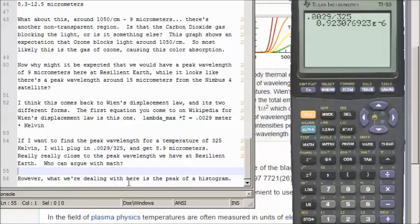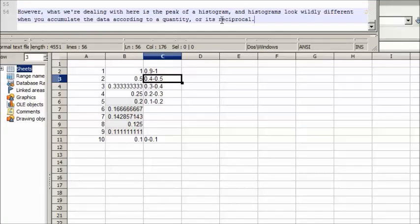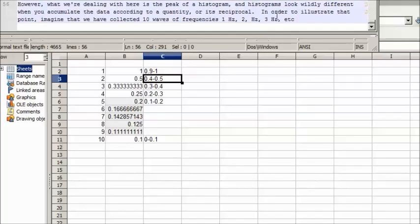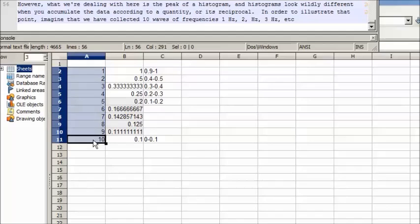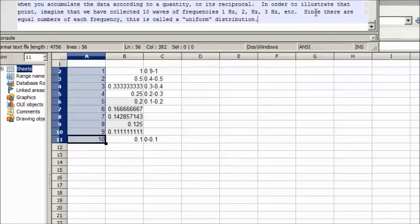However, what we're dealing with here is the peak of a histogram. Histograms look wildly different when you accumulate data according to a quantity or its reciprocal. In order to illustrate that point, imagine that we have collected 10 waves of frequencies 1 Hz, 2 Hz, 3 Hz, 4 Hz, 5 Hz, 6 Hz, 7 Hz, 8 Hz, 9 Hz, and 10 Hz. We have one wave of each wavelength, and that would be called a uniform distribution. Since there are equal numbers of each frequency, this is called a uniform distribution.